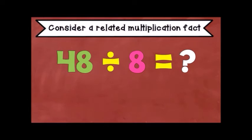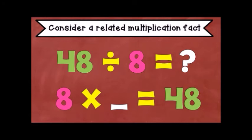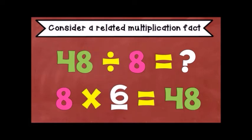Let's do it again: 48 divided by 8. How do we turn it into a multiplication problem? 8 times what number is equal to 48? 8 times 6. So 48 divided by 8 is equal to 6.